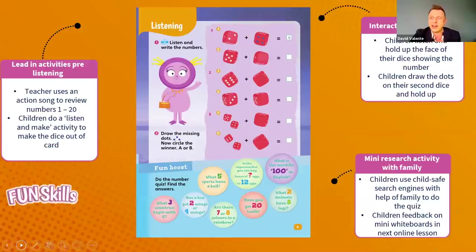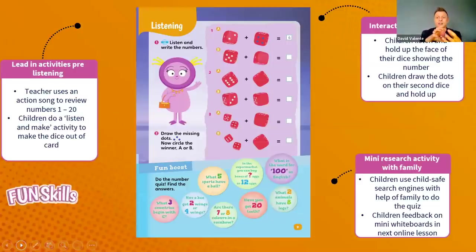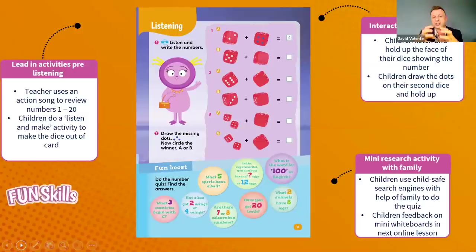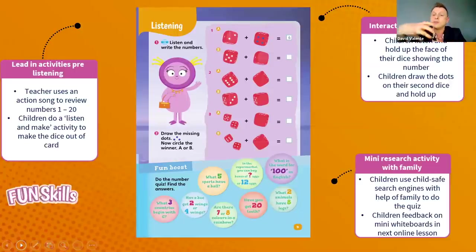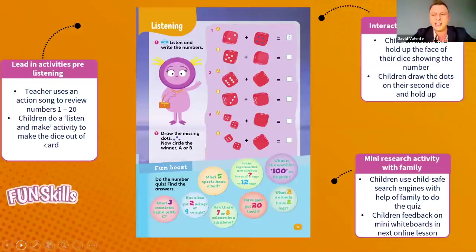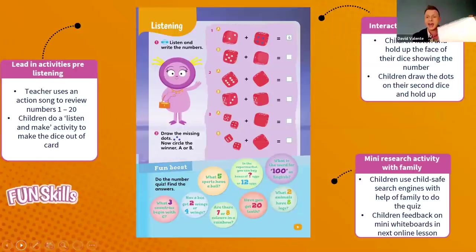For the pre-A1 level, this activity is around numbers. Bring in songs — great for reviewing numbers one to twenty. Then have the children make their own dice — a great listening activity for 'listen and make.' Making it interactive, we can lift this off the page by having children hold up their dice and the number of dots. There's also a nice quiz where they find out fascinating facts, and they can draw on the help of their families. Child-safe search engines I recommend include Searchy Pants, KidRex, and Kiddle.